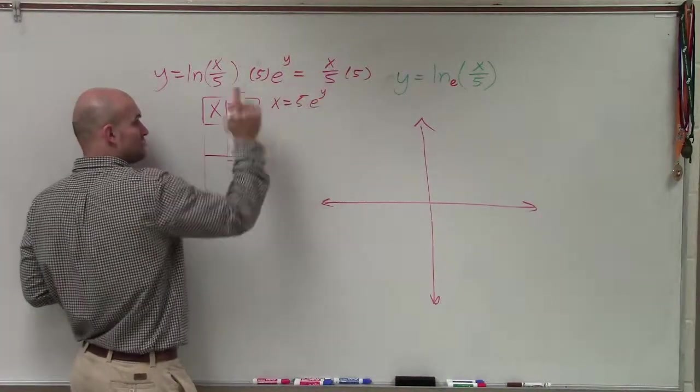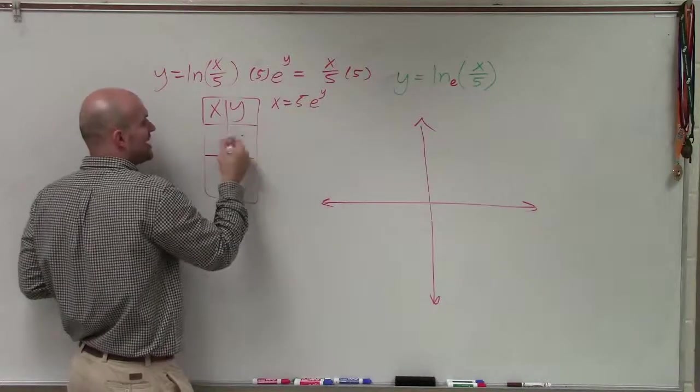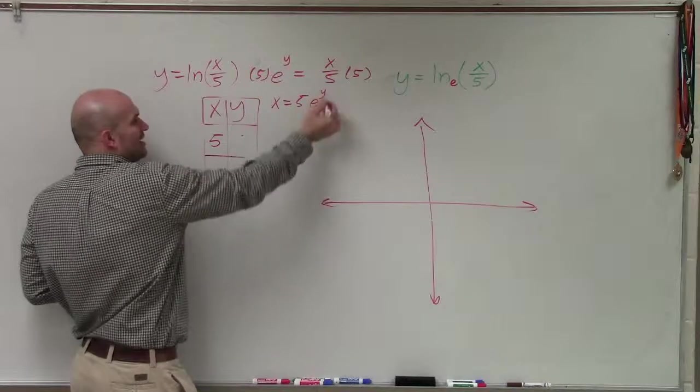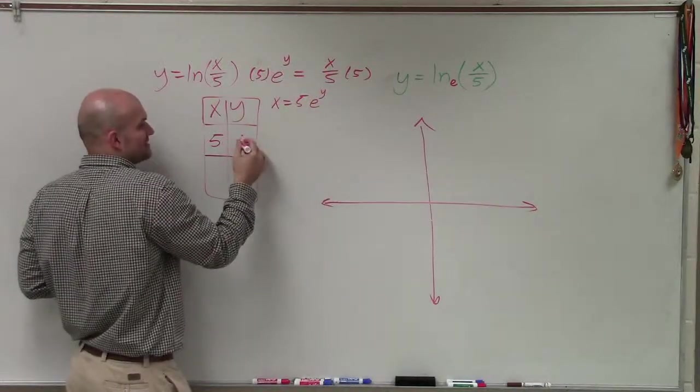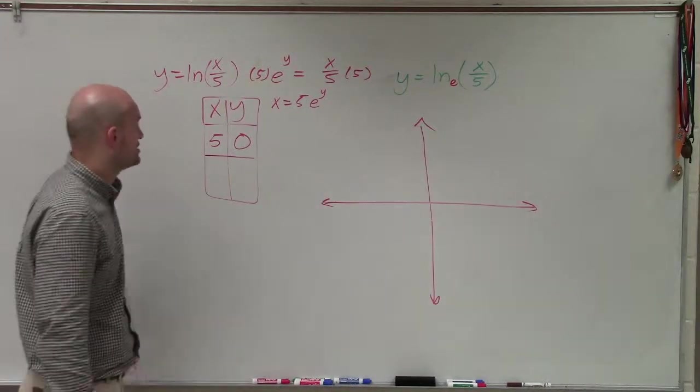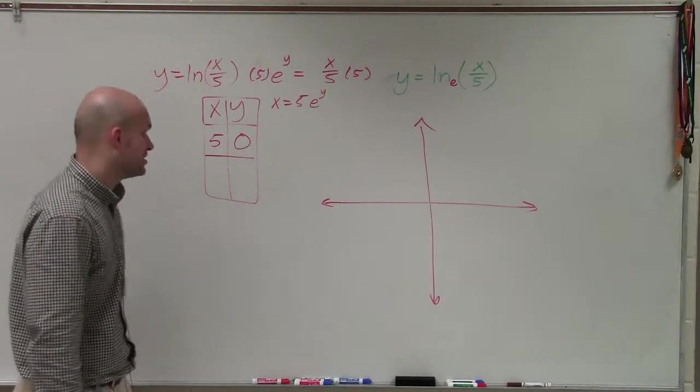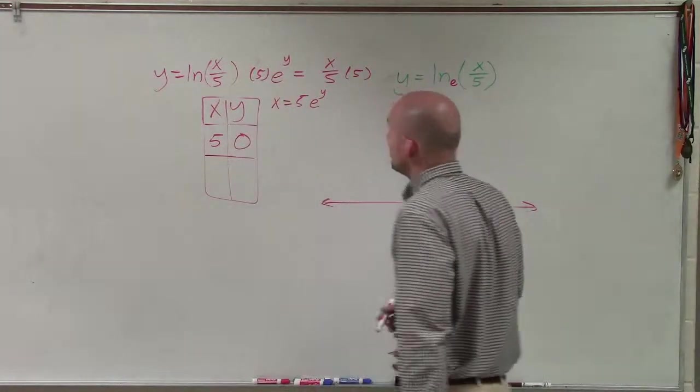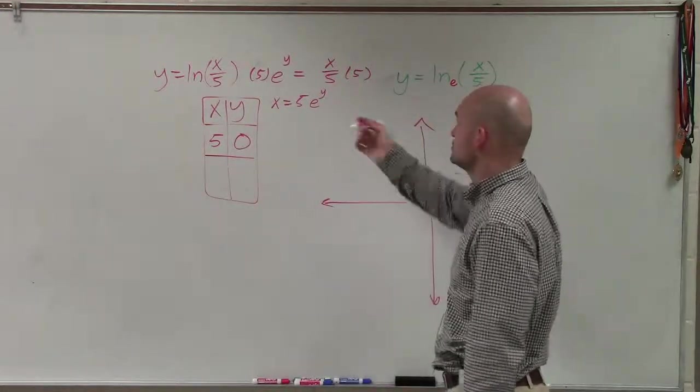And what you can see is, if I had y equal to 0, then that would be e to the 0, which would be 1. 1 times 5 would just be 5. So therefore, I know when x equals 5, and we can eliminate with that e to the 0 when y equals 0. So I know I have one coordinate point, which is 5 comma 0.